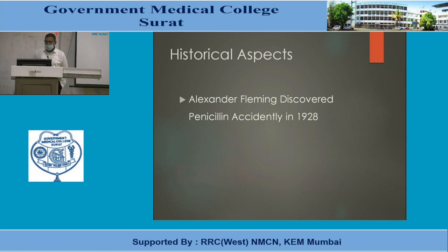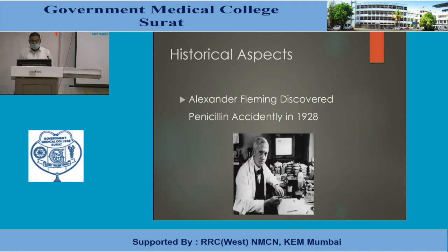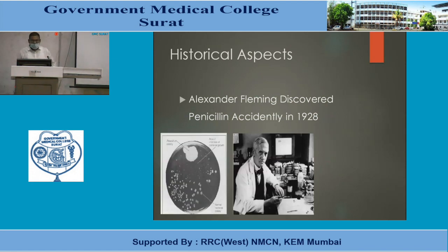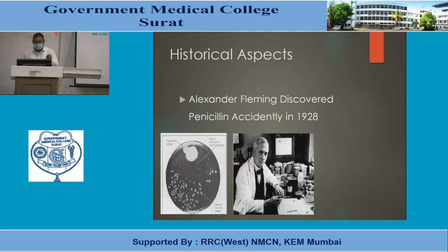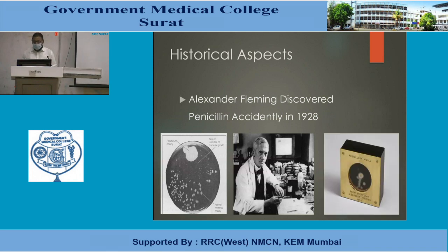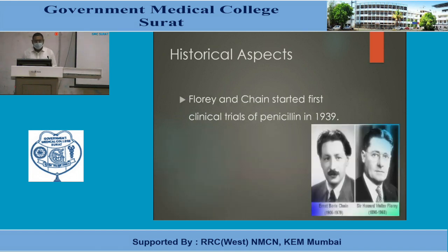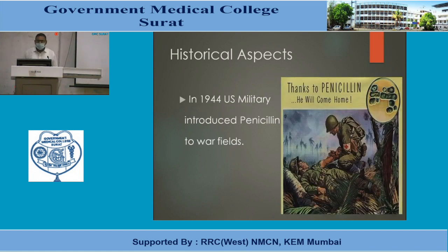Sir Alexander Fleming accidentally discovered penicillin in 1928. Certain culture media was left unattended, and when he returned he found bacterial colonies were not growing around a species of Penicillium, leading him to postulate that it secreted a substance inhibiting bacterial growth. He could not purify it, but Chain and Florey later did, and penicillin was produced at large scale and used to treat wounds in World War II.